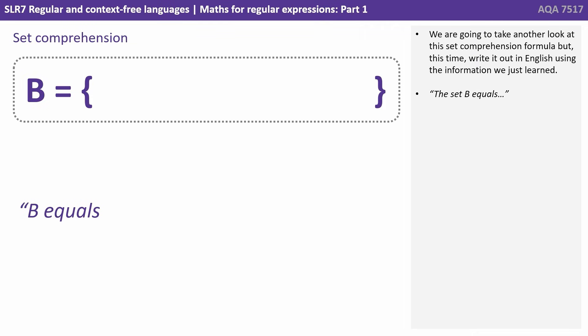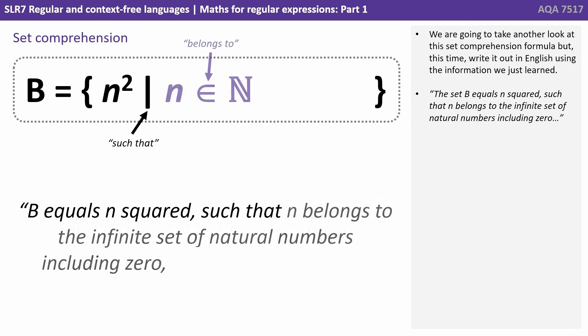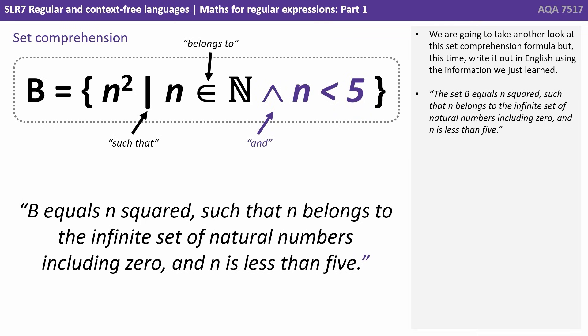We're going to take another look at this set comprehension formula, but this time write it out in English using the information we just learned. So we have the set B equals N squared such that N belongs to the infinite set of natural numbers including 0 and N is less than 5.